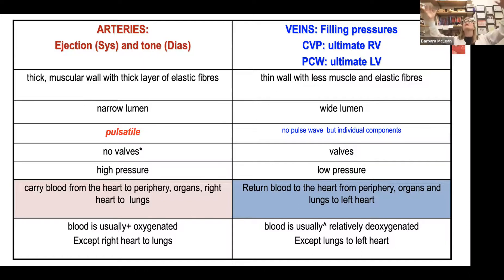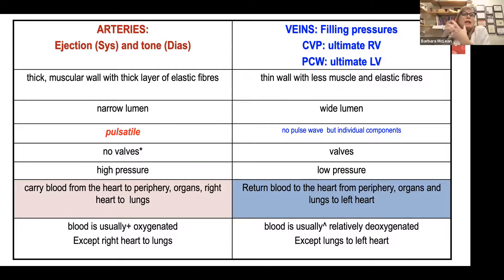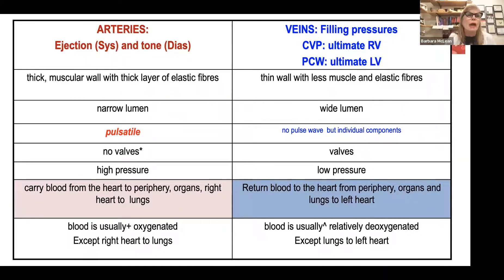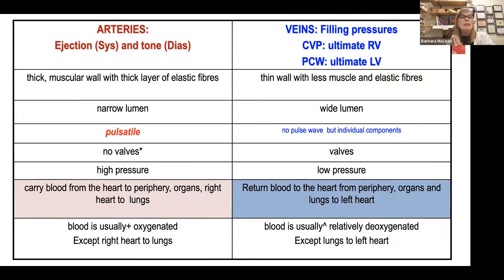I'm going to use venous pressure to understand the compliance of filling the ventricle: does the ventricle accept the volume and relax, or is it non-compliant and can't fill? If it can't fill, you've got a static column of blood in the vein, engorging the veins, and fluid escapes into the pulmonary interstitium if it's the left heart, or systemic interstitium if it's the right heart. Venous pressure is about the volume filling a chamber; if non-compliant, volume is static in the veins and creeps out into the interstitium.